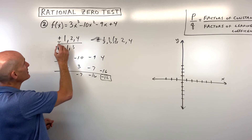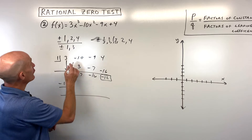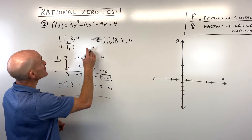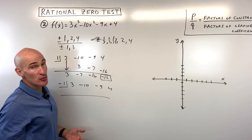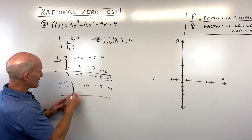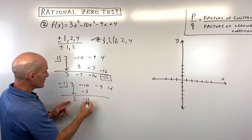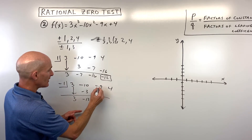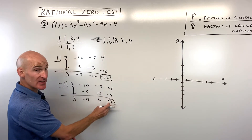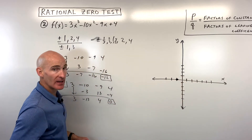Let's try negative 1. We write down our coefficients: 3, negative 10, negative 9, and 4. Remember, if there's a missing term you have to put a placeholder of 0. Drop down the first number, then multiply on the diagonal, add straight down, multiply on the diagonal, add straight down, multiply on the diagonal, add straight down. We're getting a 0 remainder — that tells us negative 1 is a zero, meaning it's going to cross the x-axis right there at negative 1.